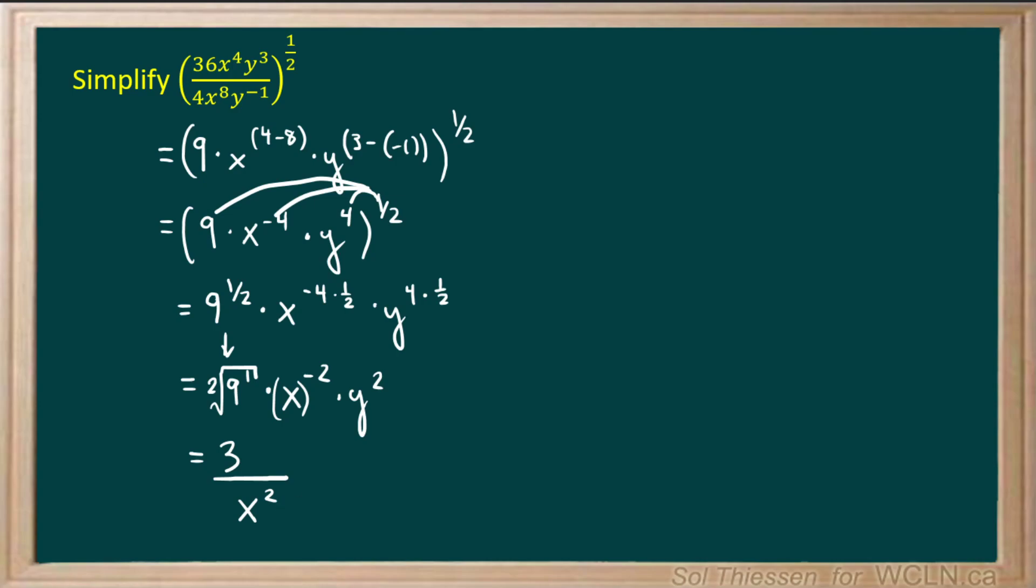So we'll have 3 over x to the power of positive 2, and then y squared will be in the numerator of our expression since the exponent is positive. So this is the final answer for this problem.